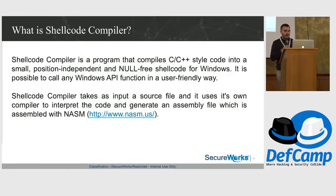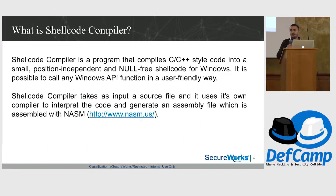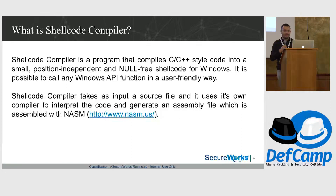This is the description for the shellcode compiler. It's a tool that takes as input a custom language, C/C++ style, and compiles it — as any other compiler — into a shellcode. That is, it is small, null-free, and the code is position independent. You can use it to call any Windows API in a really easy way. It takes the C/C++ style code as input and generates an assembly file that is later assembled with the NASM assembler.